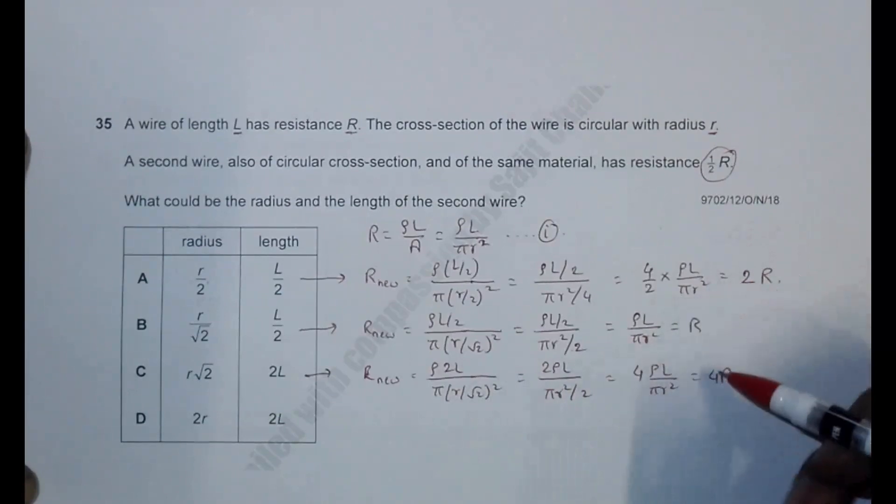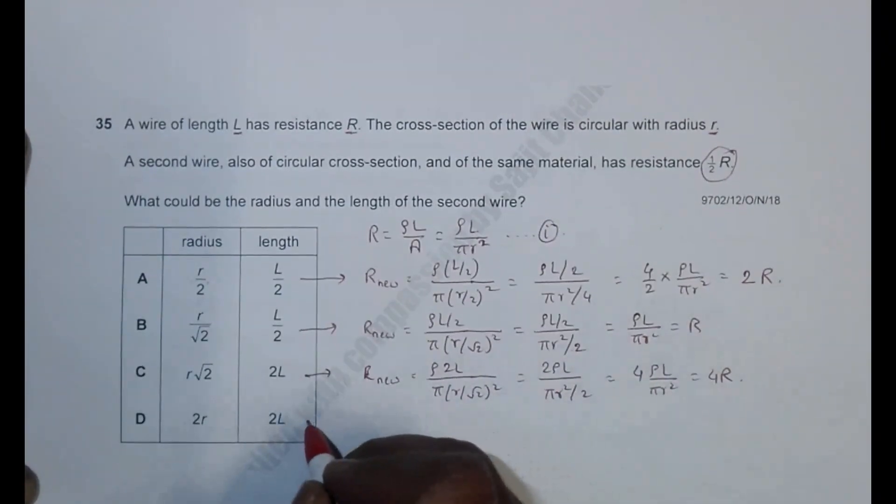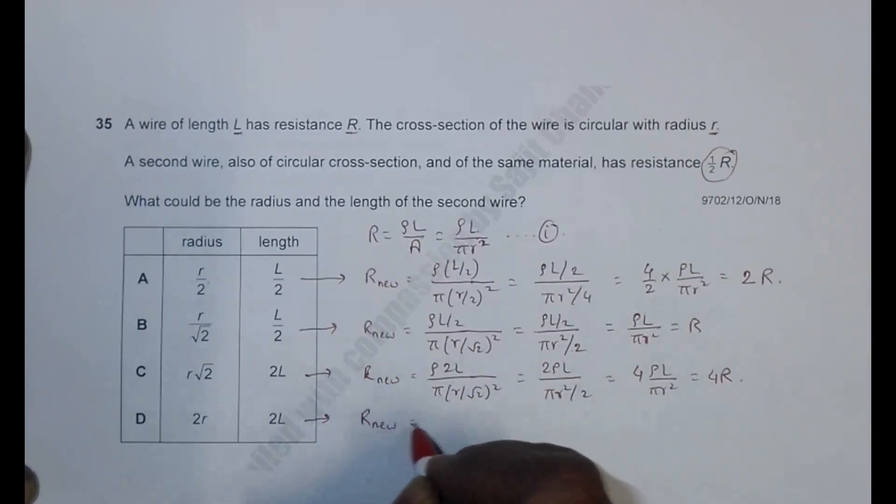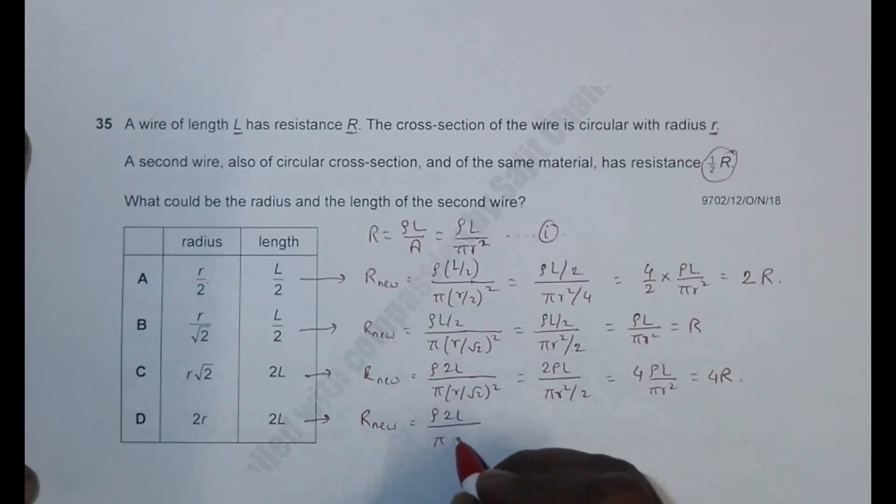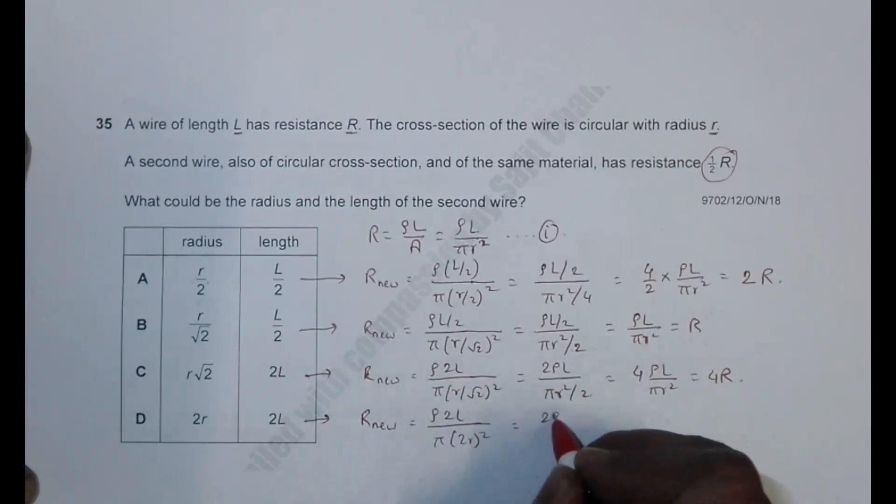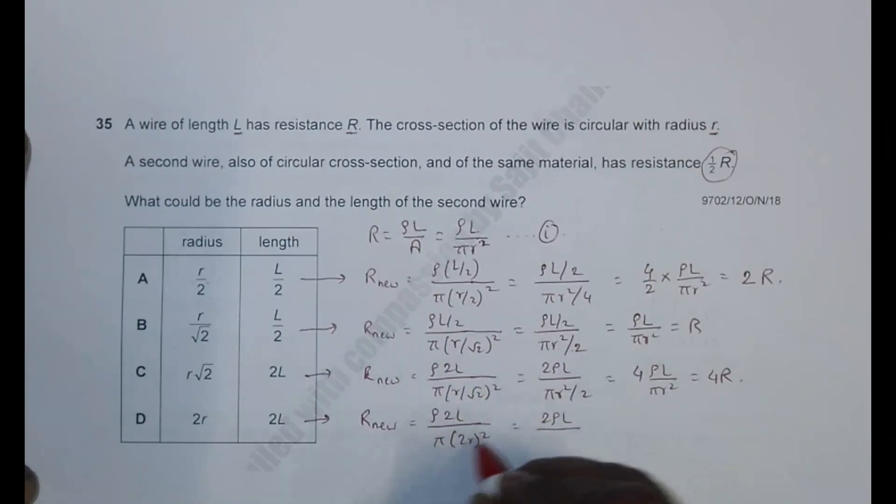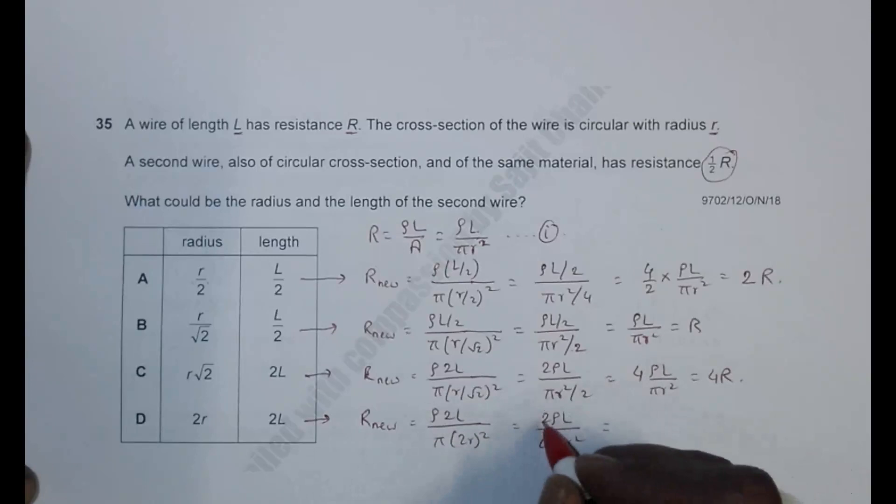So we have three choices going wrong, so the last choice should be definitely choice number D. Let's check it. R_new should be equal to ρ times 2L divided by, in the place of r², I will have 2r². So it should be equal to 2ρL by 4πr².